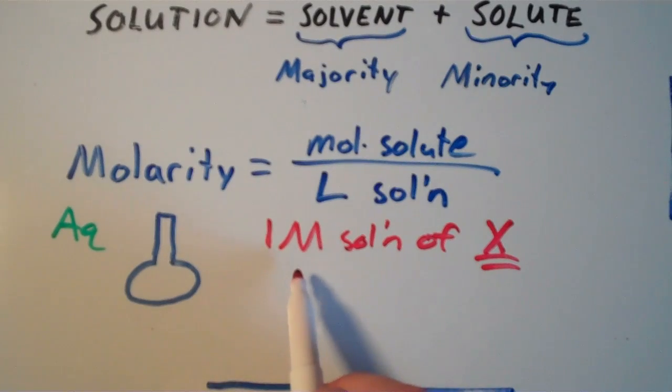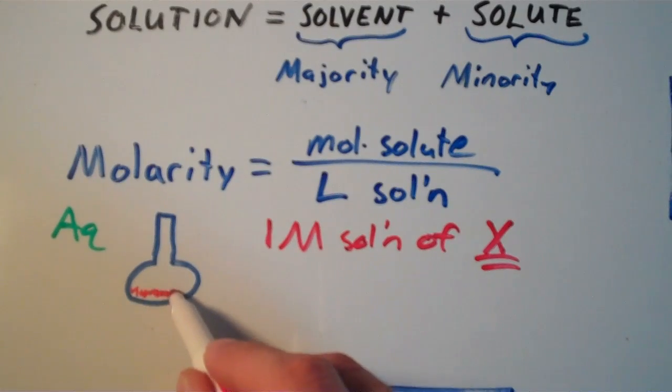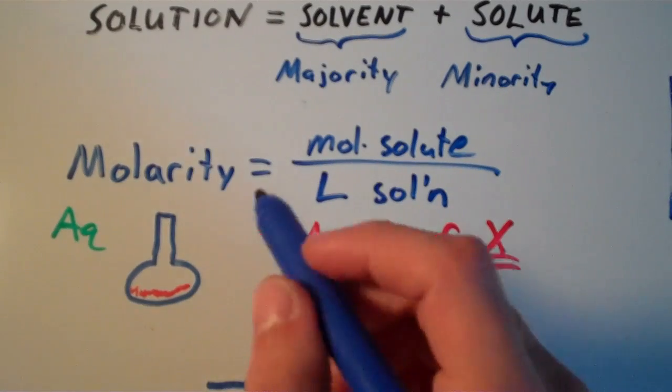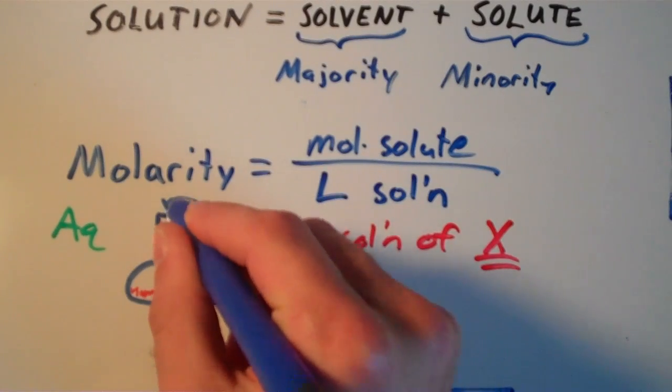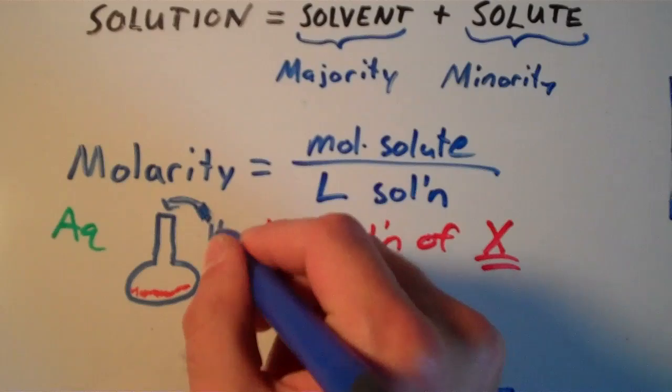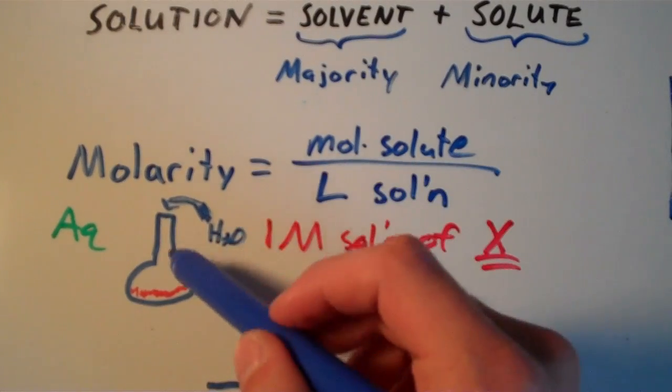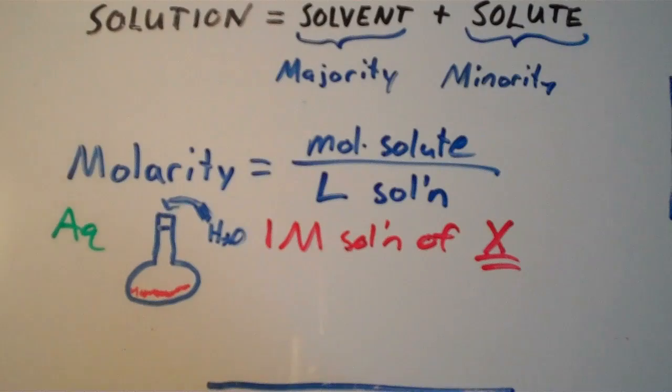To get a one molar solution, what we need to do is we need to put one mole of our substance into the flask. And then assuming that this is a one liter flask, what we do is we dilute it with water. So we add water to it and dilute it until we reach the mark on the bottle. Excuse me, the flask. So notice that we do not fill it up with H2O to one liter and then add the substance. We add the substance first and then we dilute the whole solution to one liter.